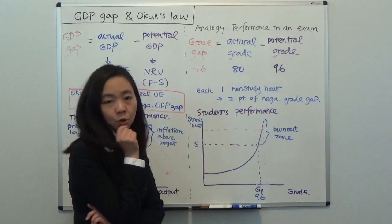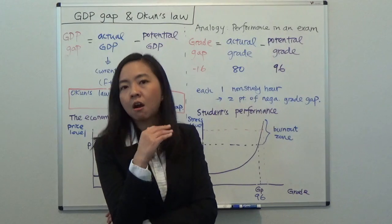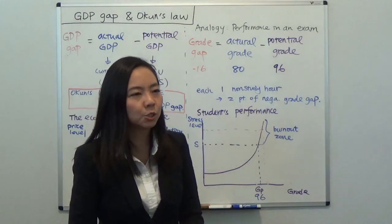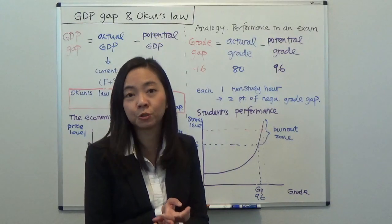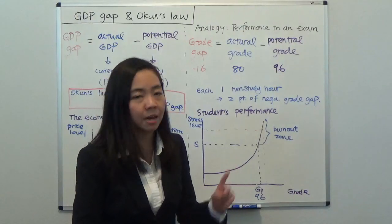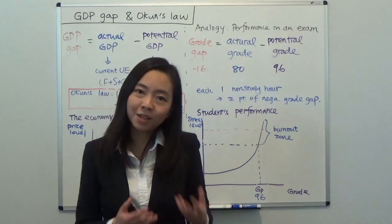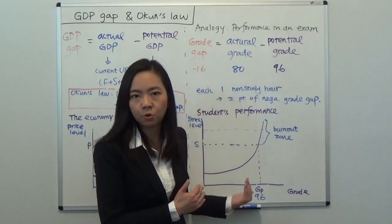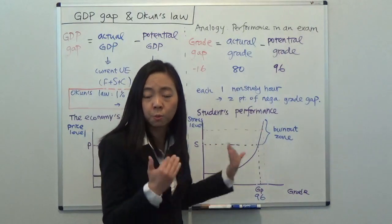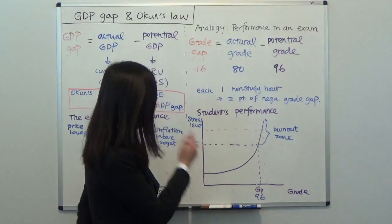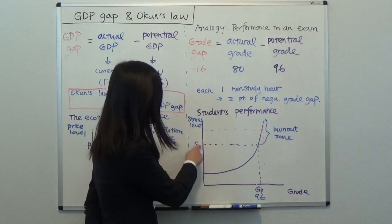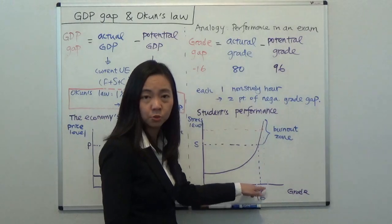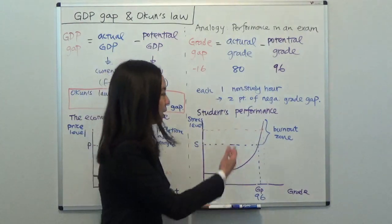Going back to the student performance example: suppose you're a very hard-working student who not only uses all the time available to study, but wants to achieve something even better. In that case, you start sleeping very little — maybe just five hours instead of seven. You don't eat, you don't take bathroom breaks, you do all kinds of unsustainable things. You use all that extra time to study, but extra studying hours don't increase your points much anymore because you're already doing your best and now burning out. Not eating and not sleeping increases your stress level enormously, and the benefit is only maybe two extra points, from 96 to 98. Your stress level has increased quite a bit — you've entered the burnout zone.